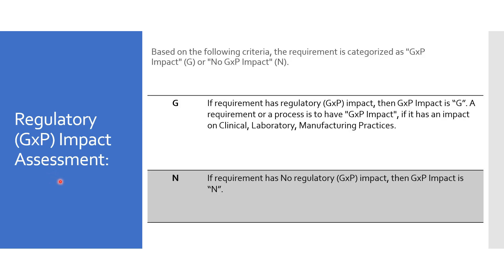First we will discuss the regulatory GXP impact assessment. If the requirement is categorized as GXP impact, then it should be denoted as G. For example, if any functionality in the software impacts product manufacturing, packing, holding, distribution, identity, strength, purity, or safety, then it should be considered as GXP impact. If it is categorized as no GXP impact, then it is denoted as N — for example, if any functionality requirement has no regulatory impact.